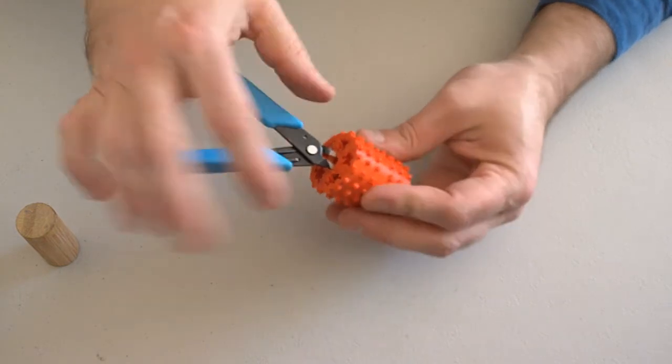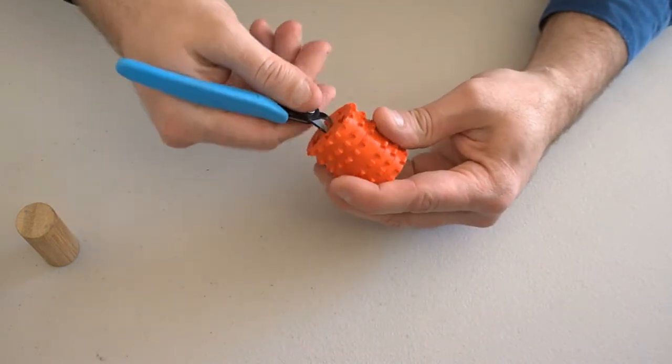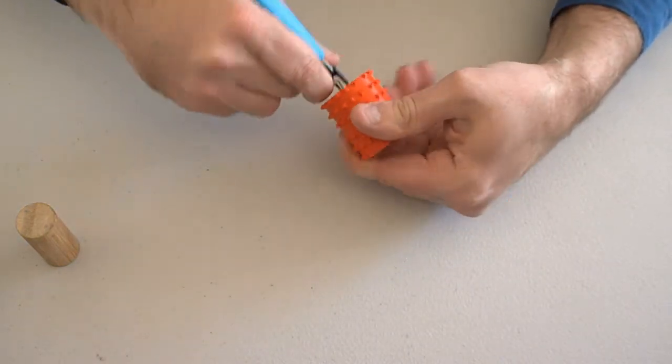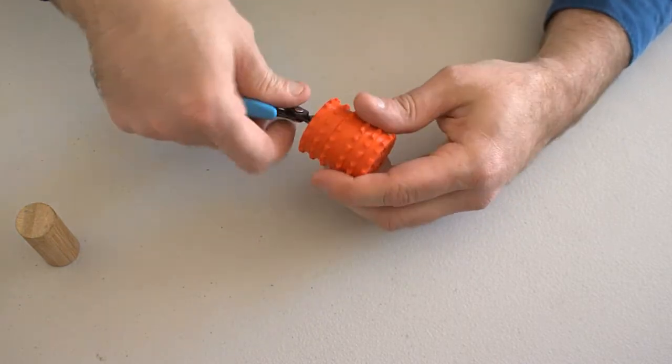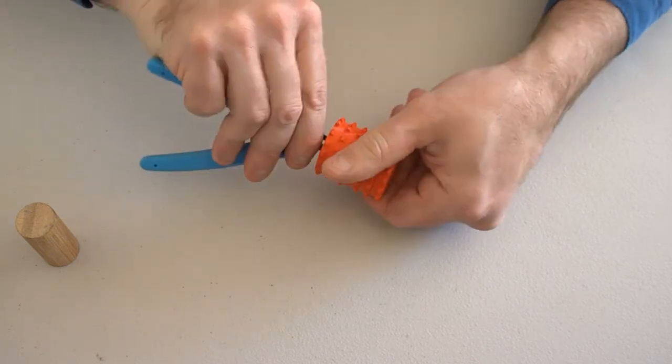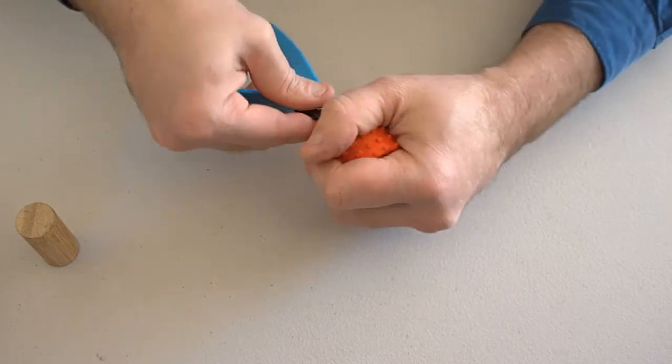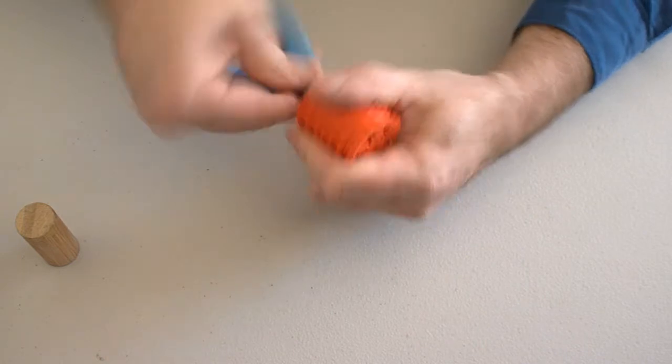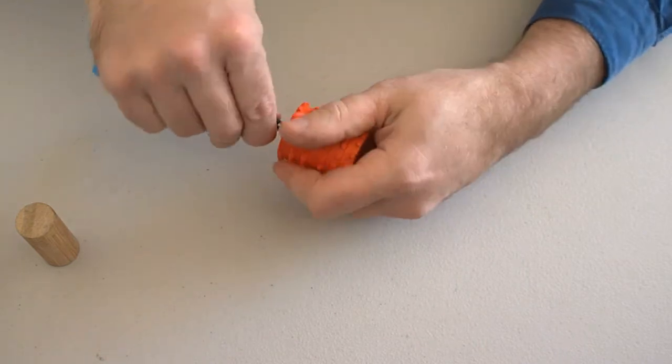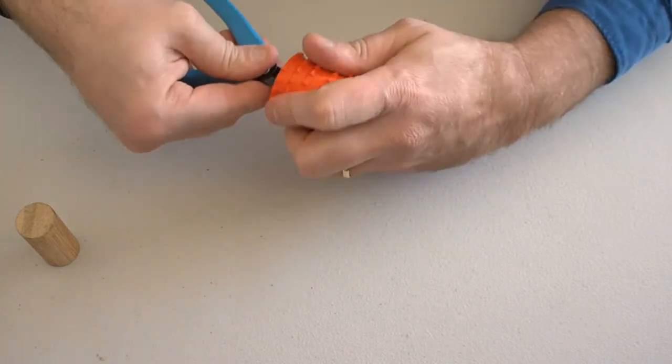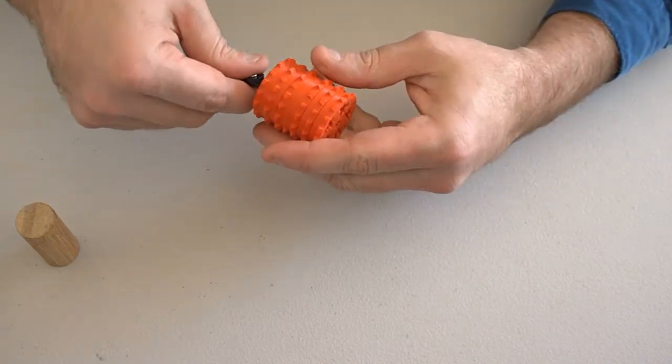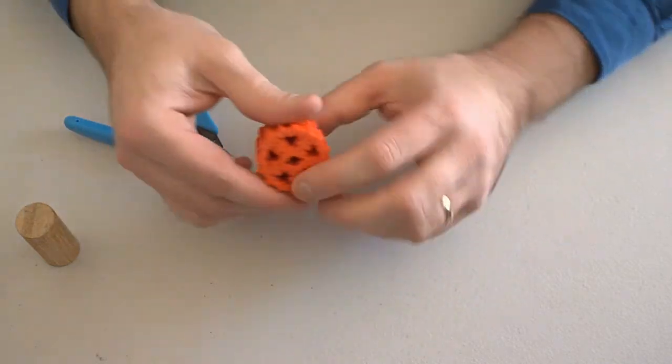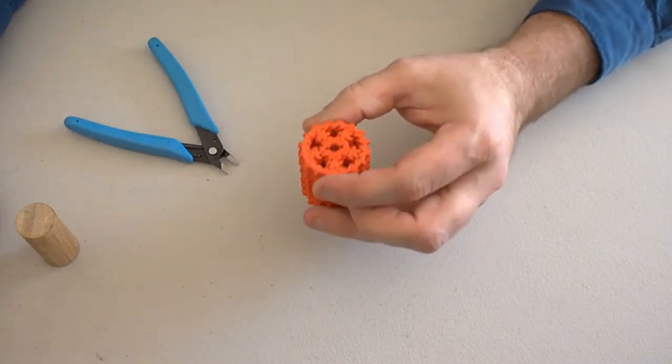Otherwise we can still use this tool to just rock it back and forth and just finish separating those ring gears which may still have a few pieces holding them together. There we go. So now we're completely freed up. There's no rattling of the gears. So we're nice and tight which is good. Which is exactly what we want.